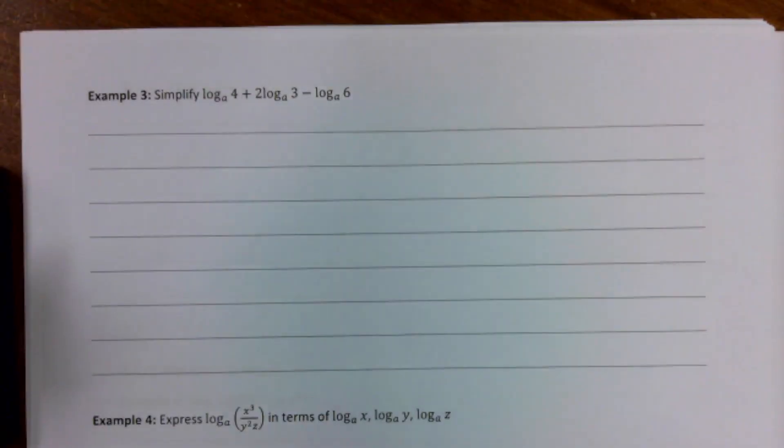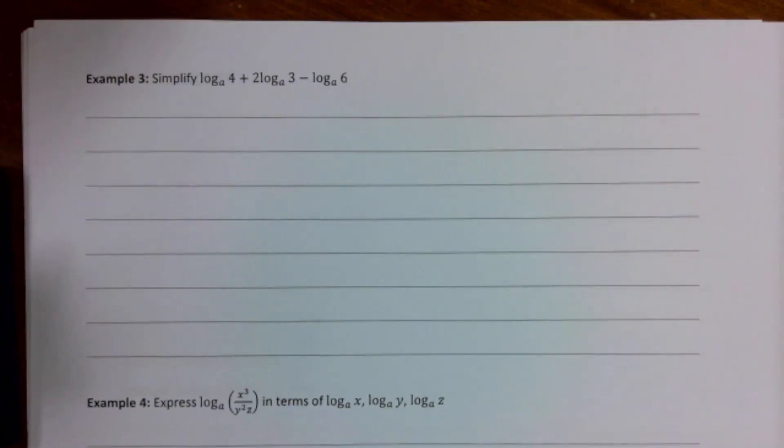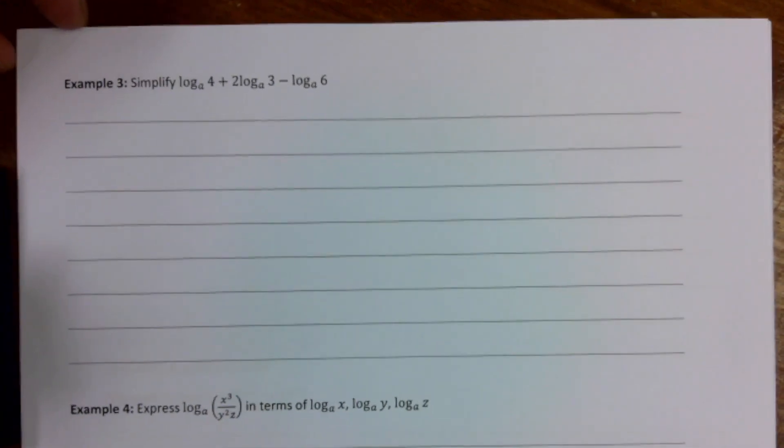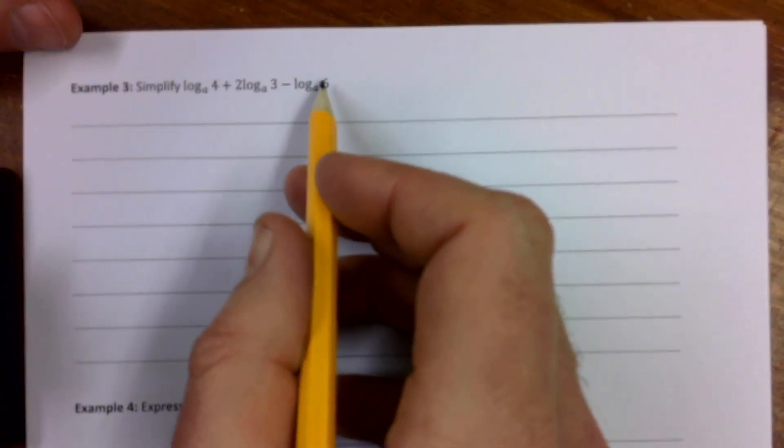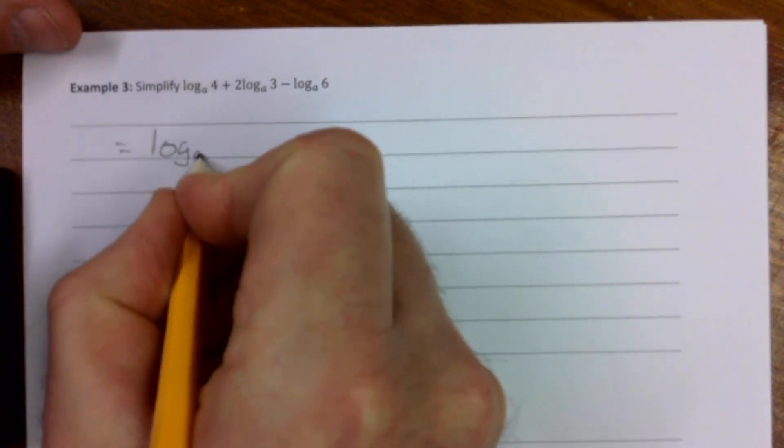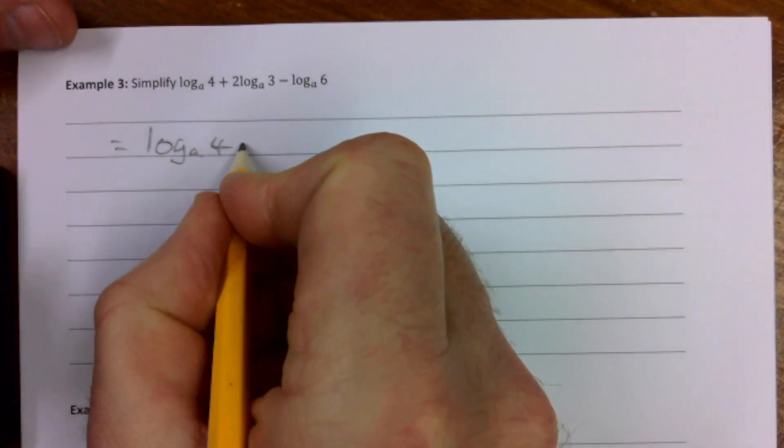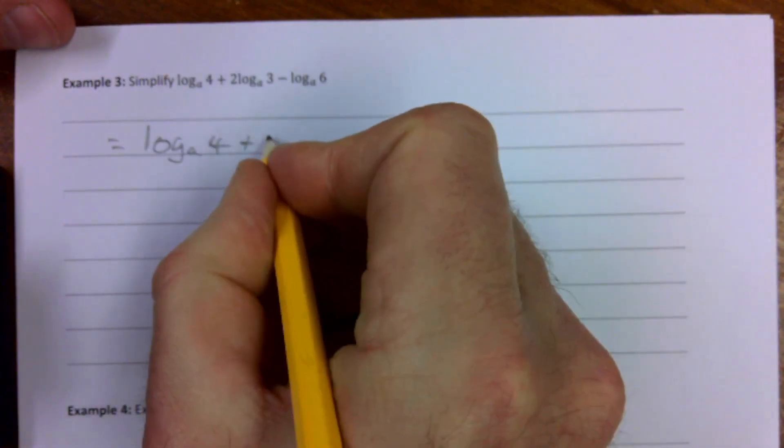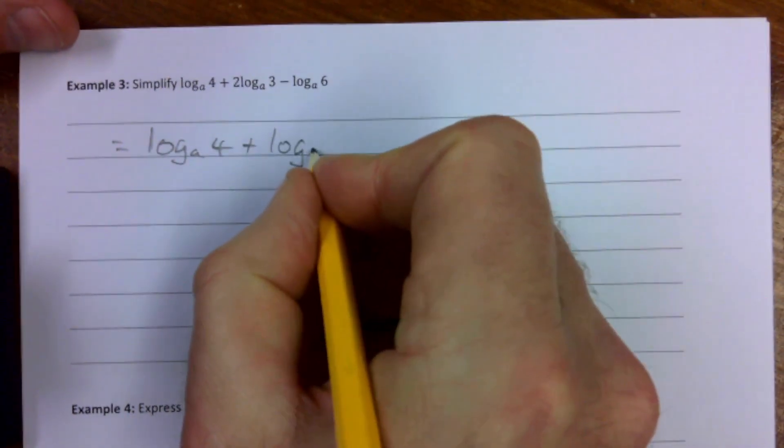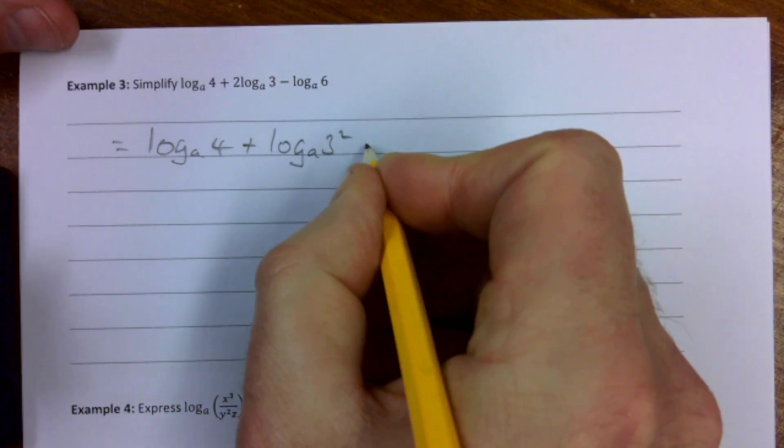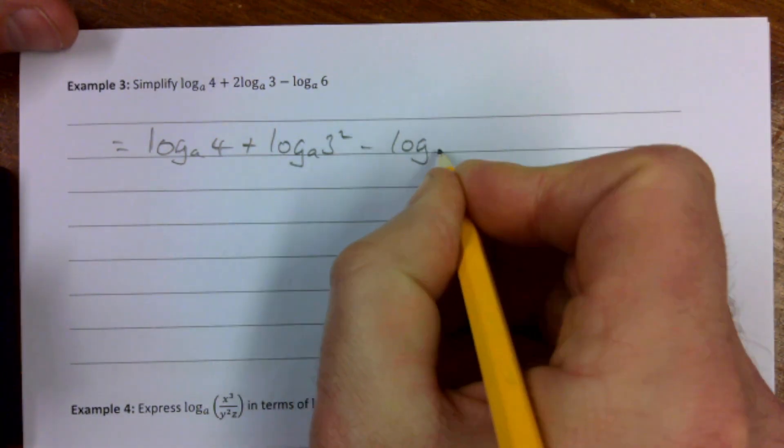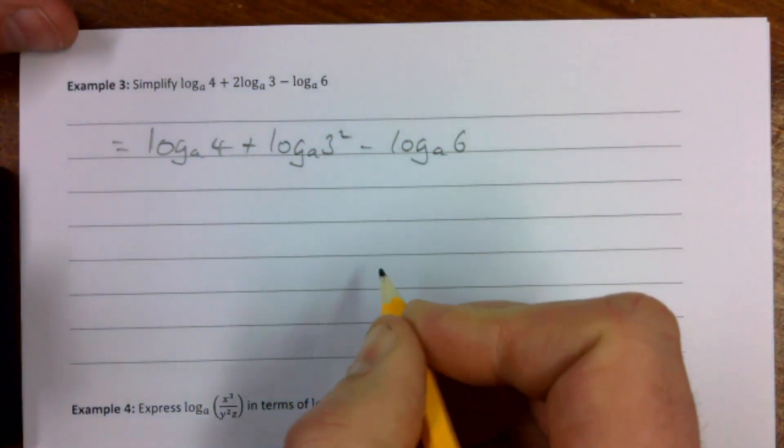Example 3, they're asking us then to simplify log to base a of 4 plus 2 log to base a of 3 minus log to base a of 6. So that's log to base a of 4 and then using our third law of logs, that 2 can come up here. So that's the same as log to the base a of 3 squared minus log to base a of 6.